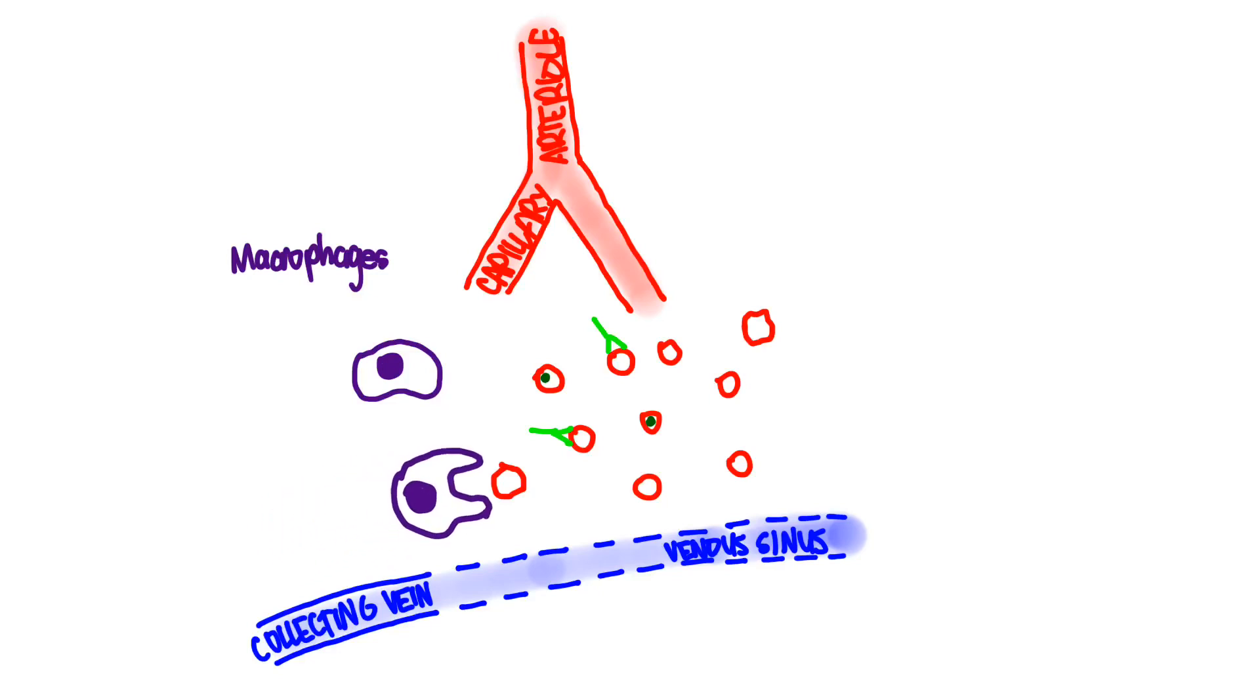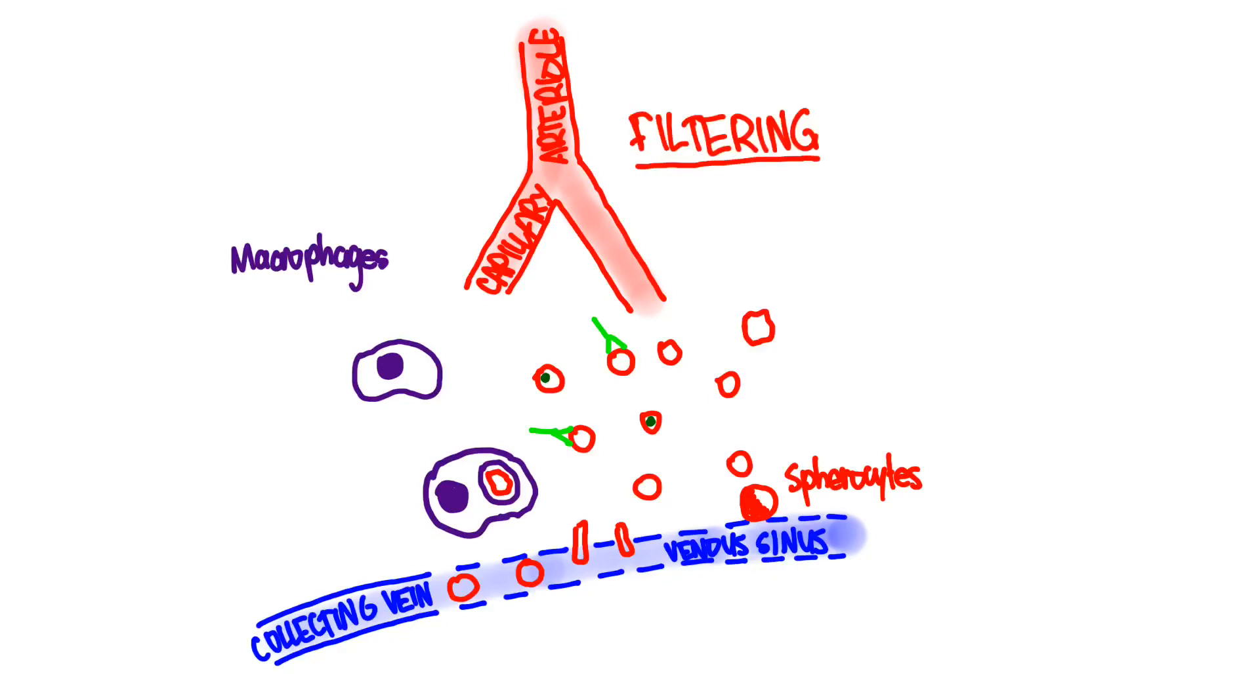So the macrophages will come and phagocytize these RBCs. And it will try to grab up as many of these RBCs as it can. Now the only ones that are going to make it through these little fenestrations in the venous sinus here are the normal RBCs, because they're pretty pliable. So these normal ones can fit in and then go off through the collecting vein back to the circulation. Now the abnormally shaped RBCs, particularly the spherocytes, are too big to fit, and so they can't get in here, and then ultimately fall victim to the macrophages. So this is the filtering function of the spleen.